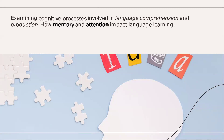Examining cognitive processes involved in language comprehension and production, and how memory and attention impact language learning. This mainly focuses on the cognitive processes involved in psycholinguistics to enable the person's comprehension and production abilities through memory and attention that the person shows towards language while learning.